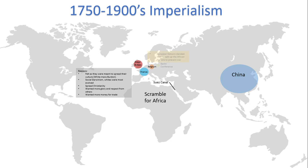A major effect of imperialism was the Scramble for Africa. In the Scramble for Africa, many European nations were looking for a piece of Africa to make money and build their glory. Otto von Bismarck hosted the Berlin Conference — knowing that in the attempt to grab as much land from Africa as possible there would be many wars between European nations — so at the Berlin Conference the European nations split up Africa in a way that everyone would be satisfied.